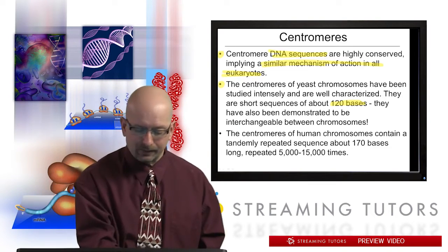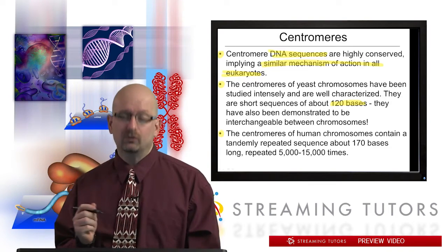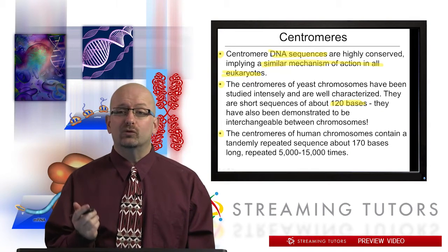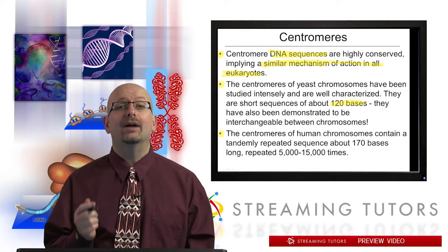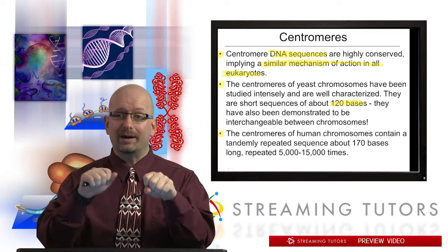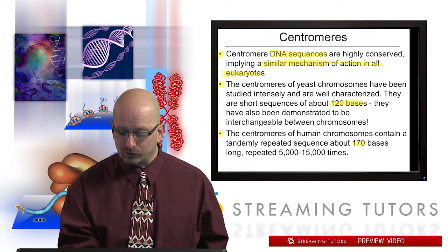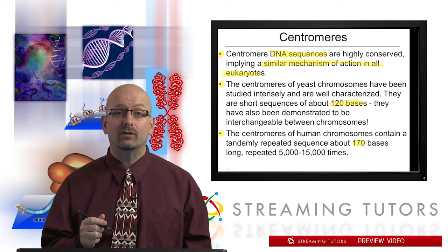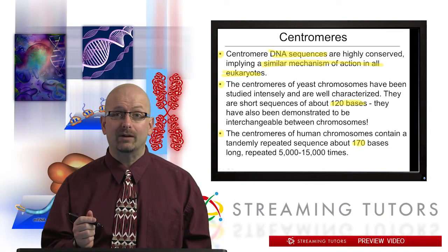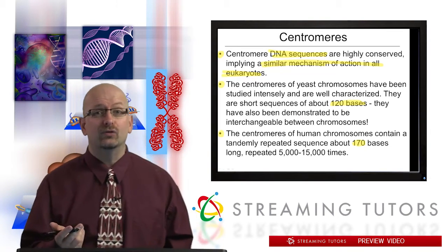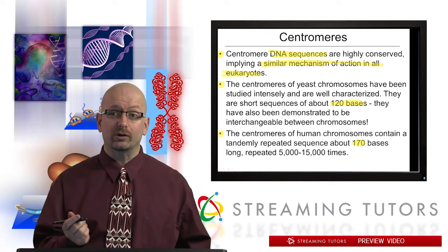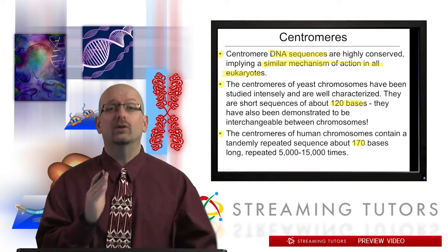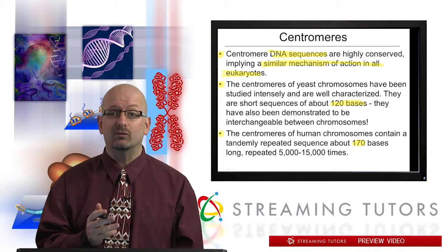With respect to human centromeres, human chromosomes contain a tandemly repeated sequence — just means one after another — of about 170 bases repeated anywhere from 5,000 to 15,000 times. So the centromere is a larger structure in humans, but the basic idea is similar; you just have a lot of repeats there.